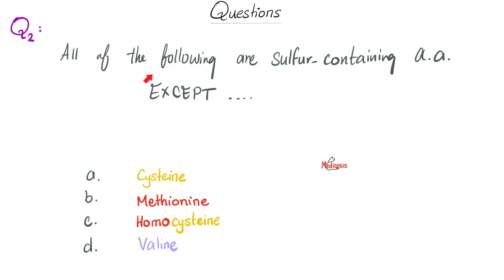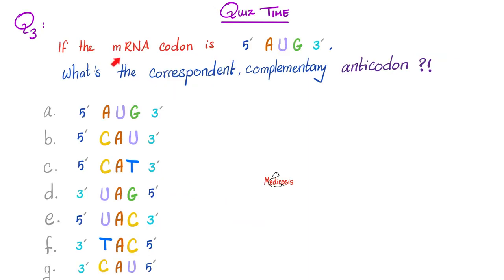Question number 2. All of the following are sulfur-containing amino acids except. Pause and try to answer this yourself. How about cysteine? Yes, it does have sulfur. Methionine. It does have sulfur. In fact, the word thio means sulfur. Homocysteine contains sulfur. The only one that does not contain sulfur is valine.